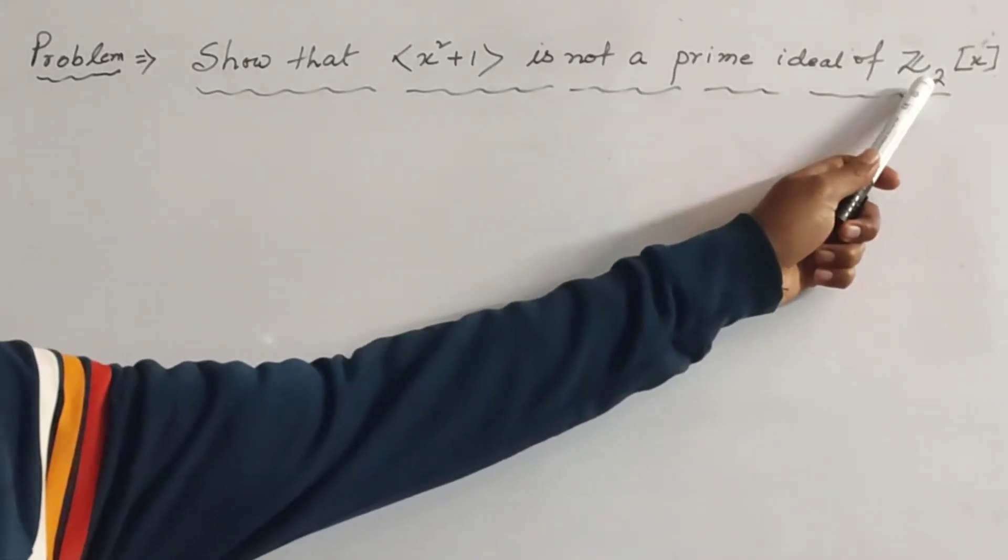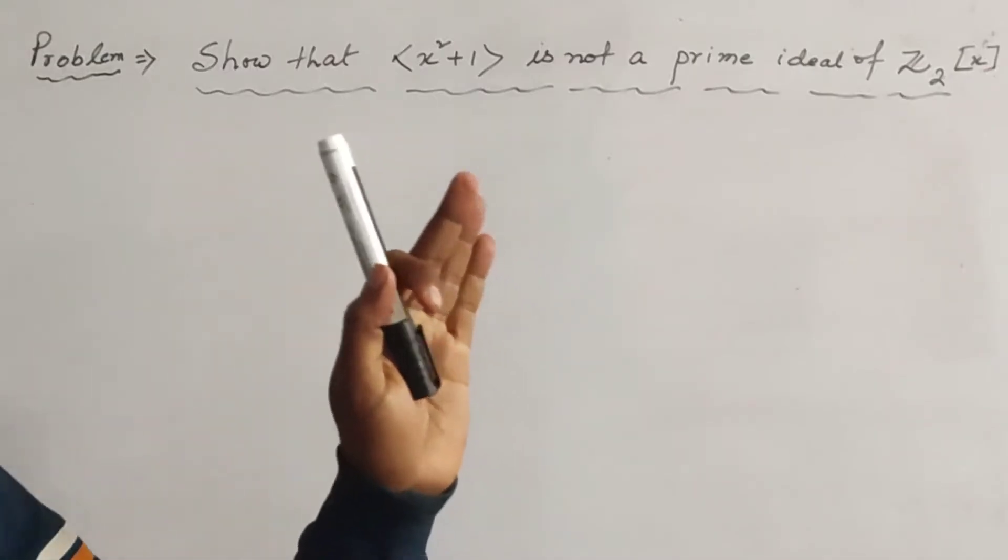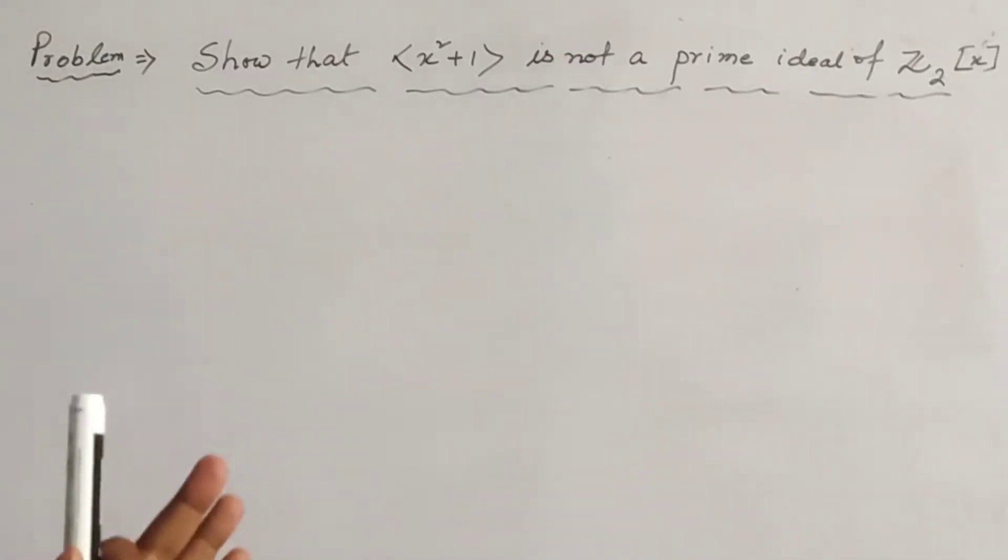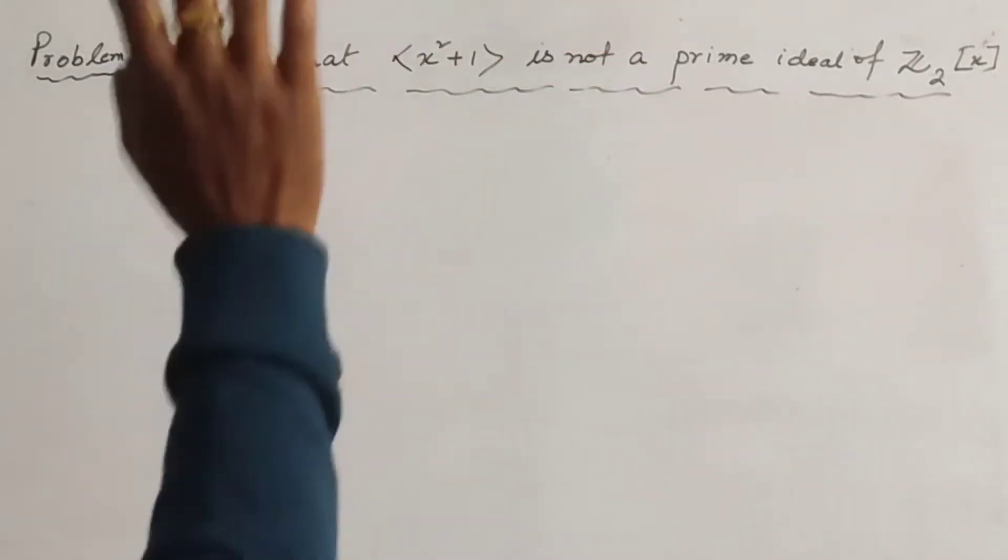Z₂[x] means the polynomial whose all coefficients are in modulo 2. That is, the coefficients are only 0 and 1, 0 plus and 1 plus. Now we have to see that this is not a prime ideal.